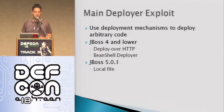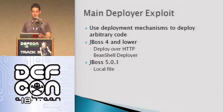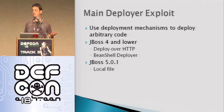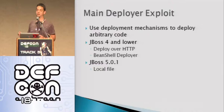JBoss 5 is a little bit interesting, and I spent most of my time looking at 5.0.1. The HTTP deployer and the BeanShell deployer — the code is all there but it doesn't seem to be quite fully implemented. But if you can get a file on the local file system — anywhere on the file system — you can deploy that. Think about things like anonymous FTP or broken image upload mechanisms. If you can get a file there, that's game over no matter what version of JBoss you're using.